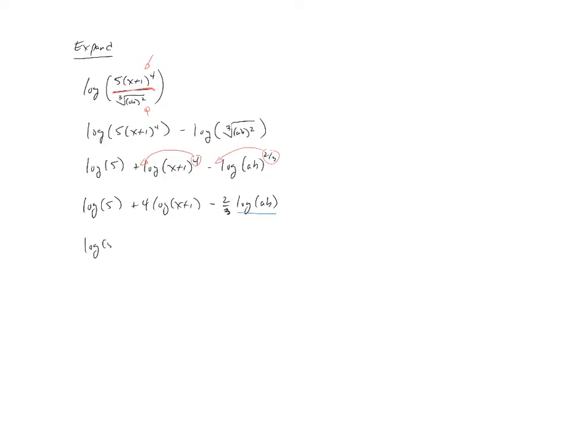The last piece of the puzzle is to expand the log AB. So log five plus our four log of X plus one minus two-thirds log of A plus log of B. So me expanding log AB using a product rule turned into this.